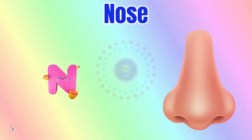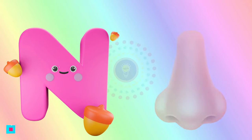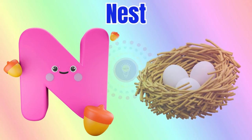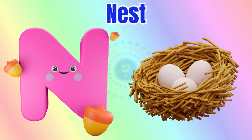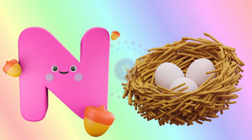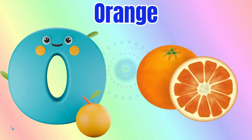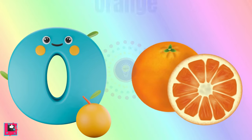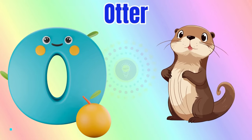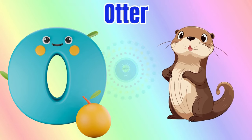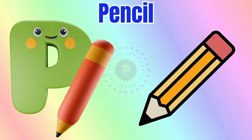N is for nose, n-n-nose. N is for nest, n-n-nest. O is for orange, o-o-orange. O is for otter, o-o-otter.